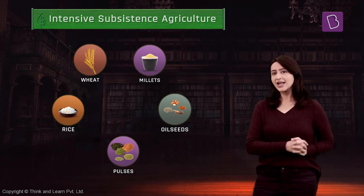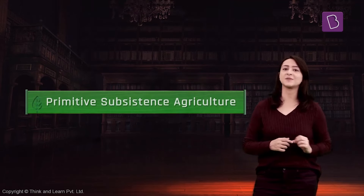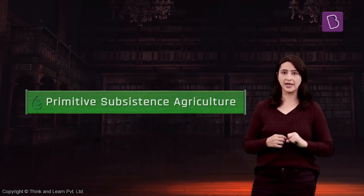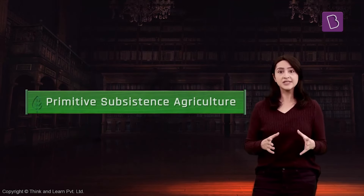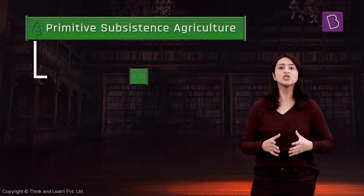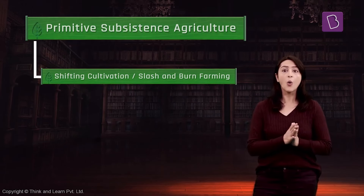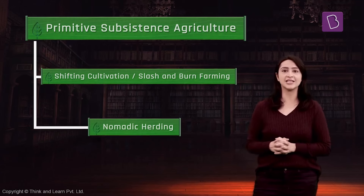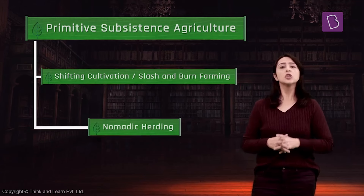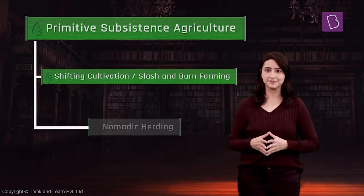Now let's look in detail at primitive subsistence farming. Primitive subsistence farming includes shifting cultivation or slash and burn farming, and nomadic herding. So first let's take a look at shifting cultivation.